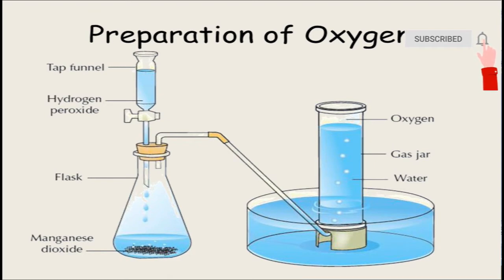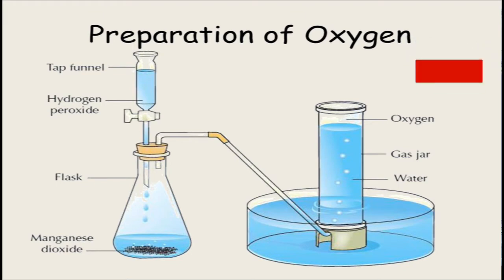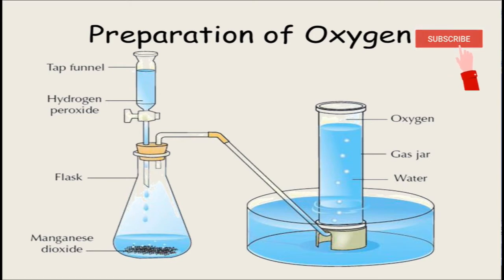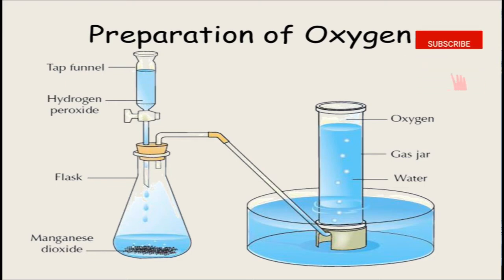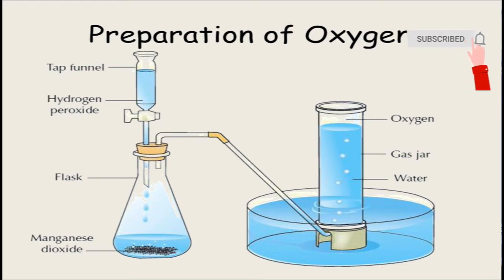For this process, the apparatus required are a flask, a thistle funnel through which hydrogen peroxide is passed, manganese dioxide as catalyst, a delivery tube to pass oxygen gas, and a water bath to collect gas in a gas jar. Oxygen gas is collected by the water displacement method because it is only slightly soluble in water.